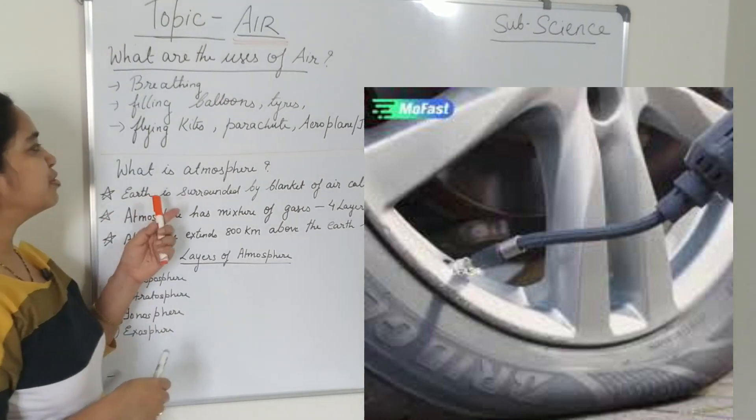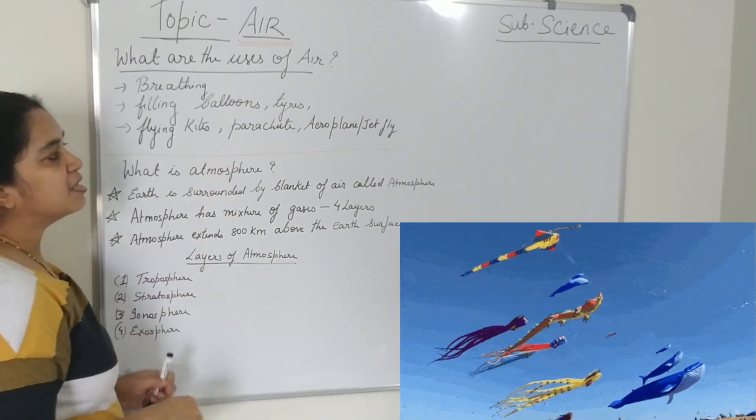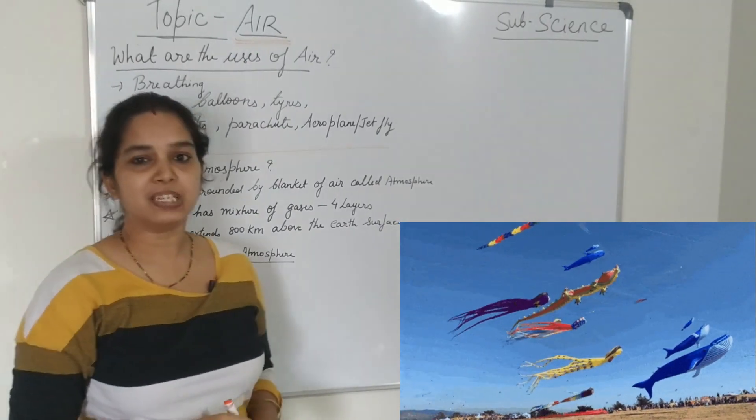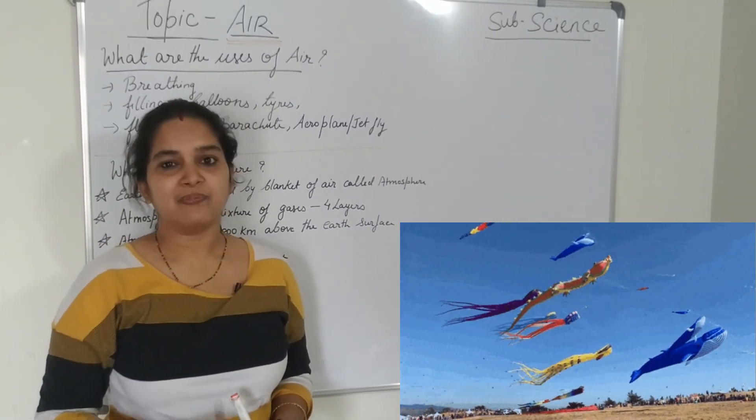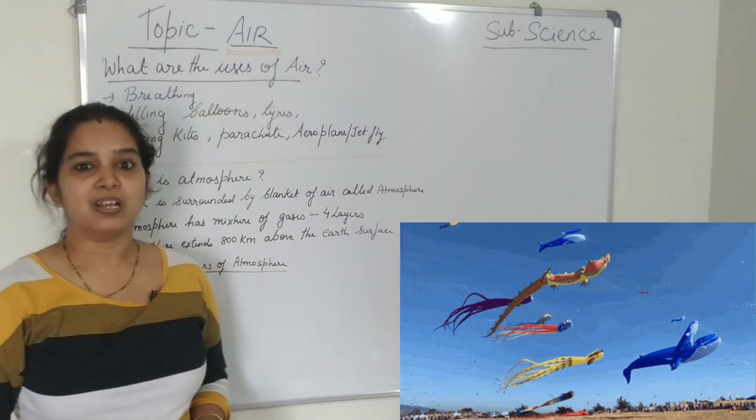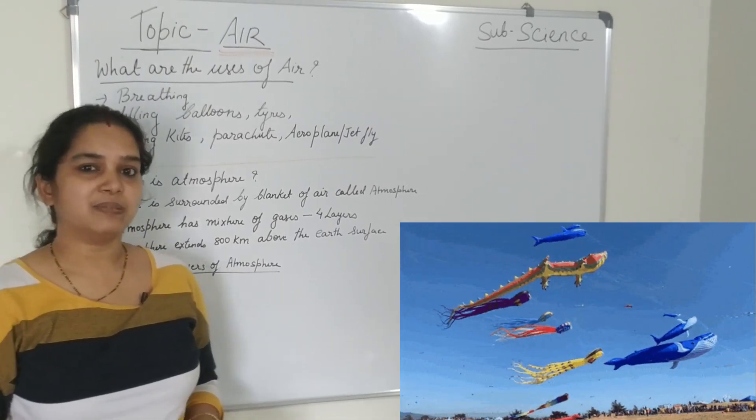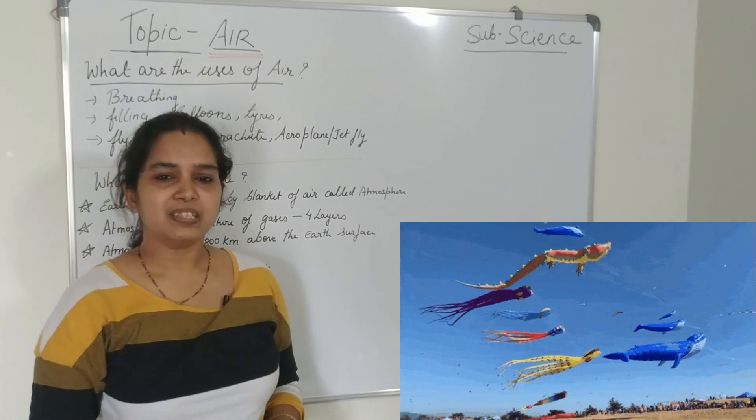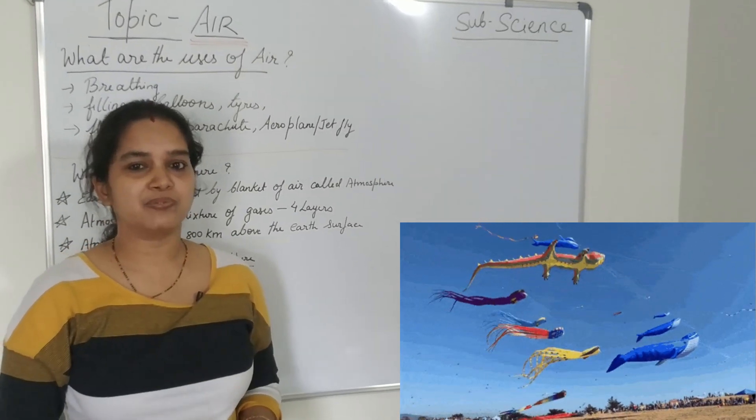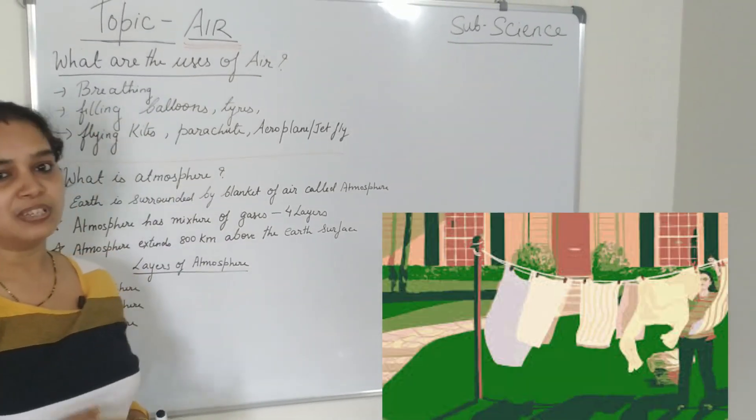Also it is used for flying the kites, the parachute, also in the aeroplanes and the jet planes fly in the air. Without air it is not possible. Also you dry up the clothes outside and it gets dried up because of the air. And also air is used for several other purposes, for the drying purpose.